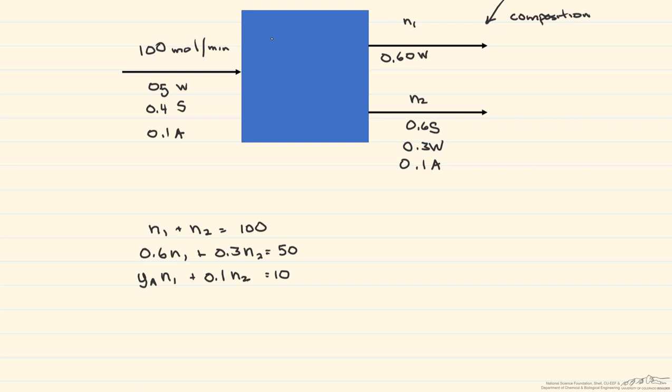And so when we solve for these equations, we come up with that N1 is equal to 66.7 moles per minute and N2 is equal to 33.3 moles per minute. And then solving finally this equation for the mole fraction of acetone, that's gonna be equal to 0.098.